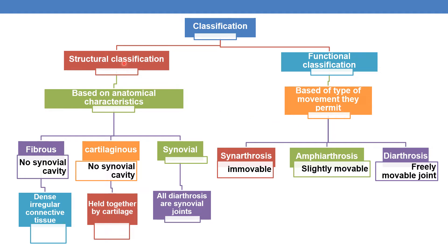Based on structural classification, joints are of three types: fibrous, cartilaginous, and synovial.